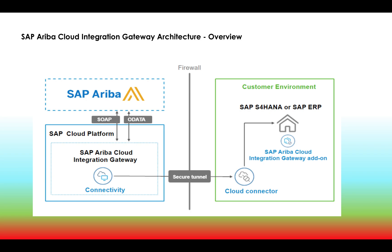That add-on contains all the programs related to Ariba integration. Next, you can download the cloud connector, install it on the customer machine, and by using the cloud connector you can connect to SAP Ariba Cloud Integration Gateway. Files can be sent via the cloud connector to SAP Ariba Cloud Integration Gateway and then forwarded to SAP Ariba.